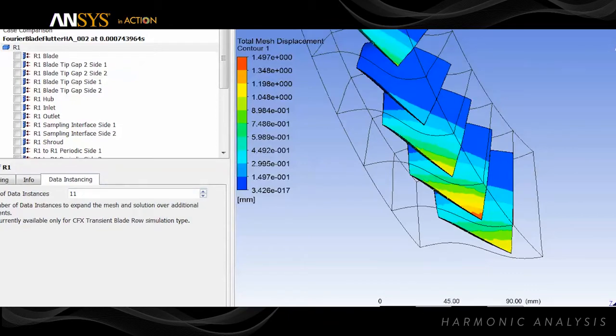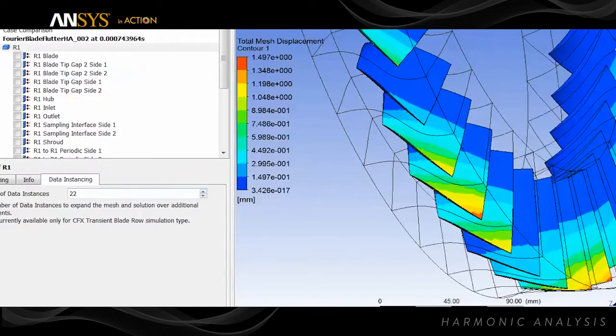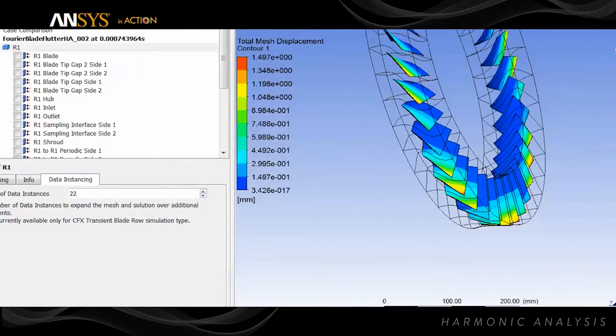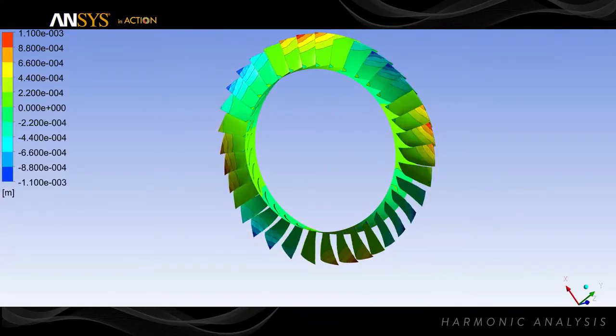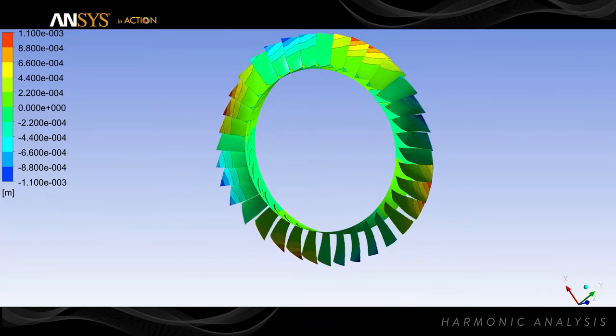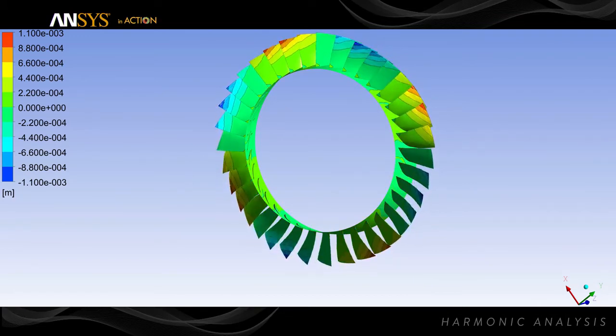Now we expand from one blade to the entire wheel in CFD post. The CFD uses Fourier transformation pitch change analysis of reduced geometry to model the phase shift at the periodic boundary. Harmonic analysis solves the transient periodic flow in hybrid time frequency up to 100 times faster than using traditional time advancement solution methods.